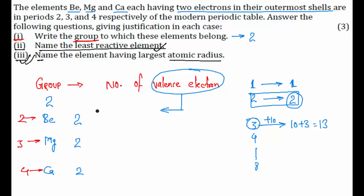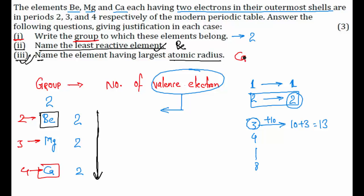So the answer to the second part — the least reactive element — is beryllium, because reactivity increases as you go down the group, since elements lower down have more tendency to lose electrons. And the answer to the third part is calcium, which has the largest atomic radius because it has the most shells. Hope you understand this concept, thank you.